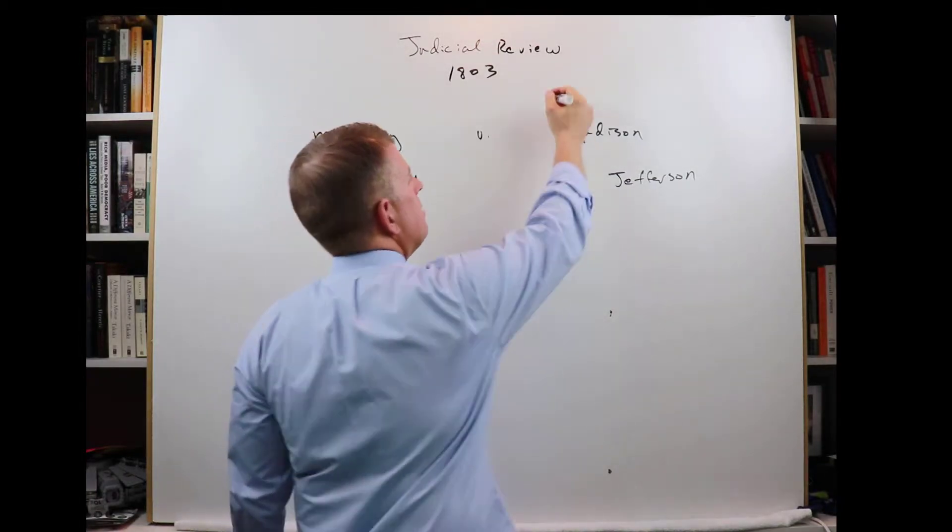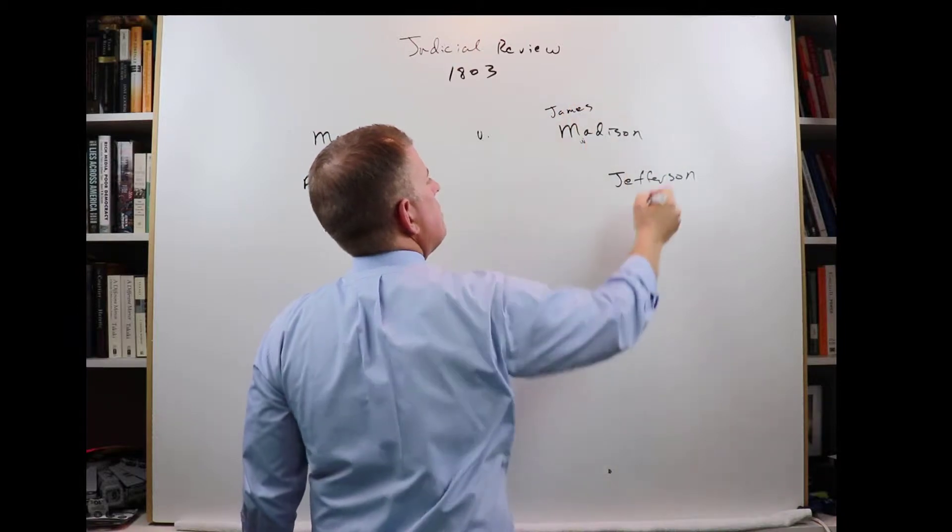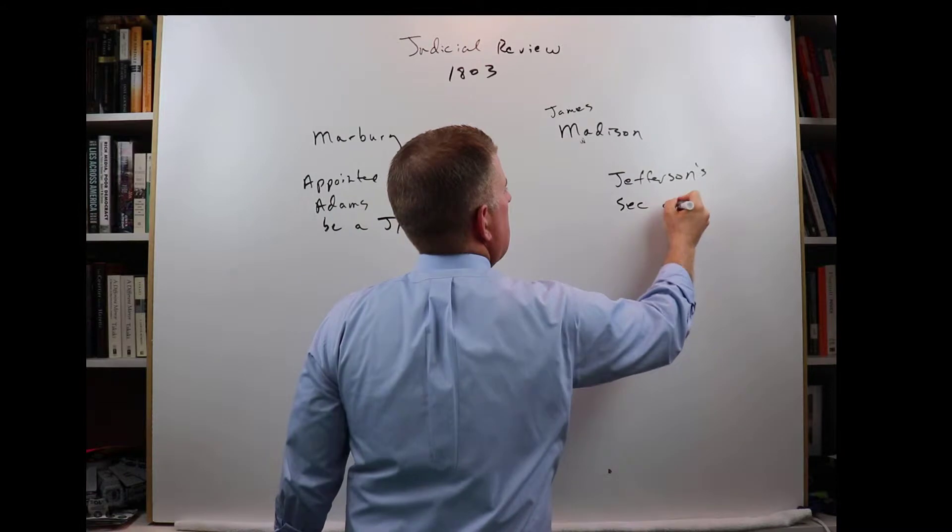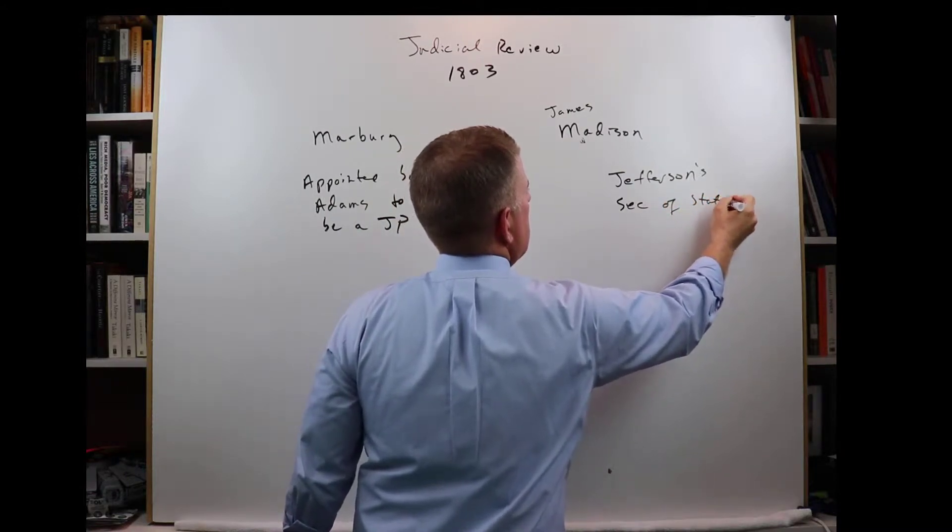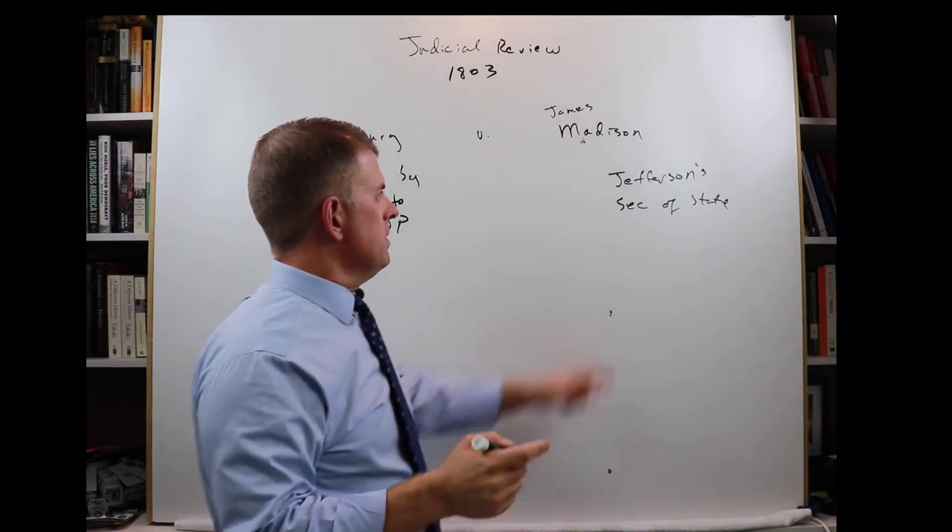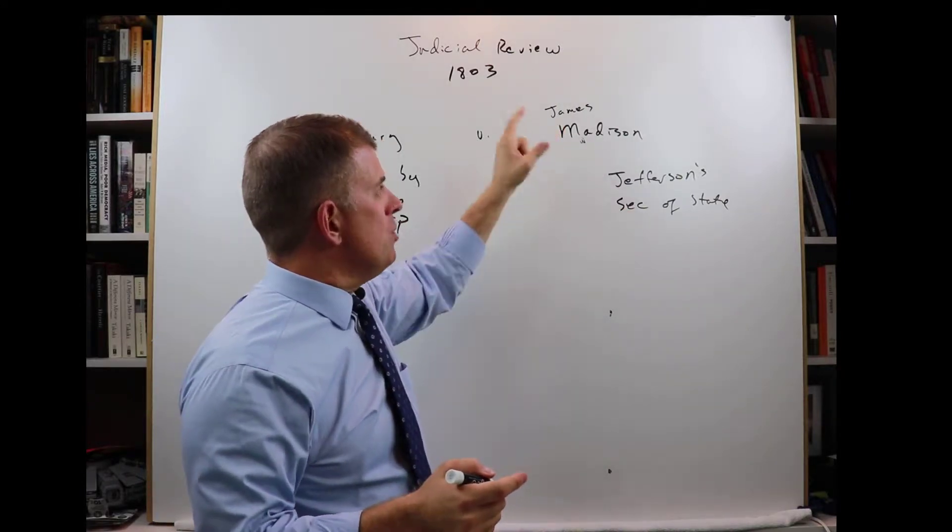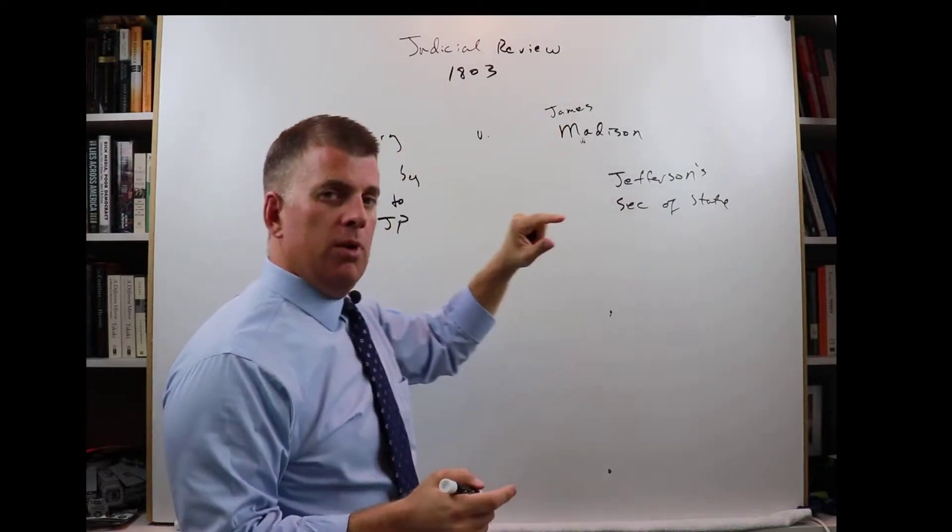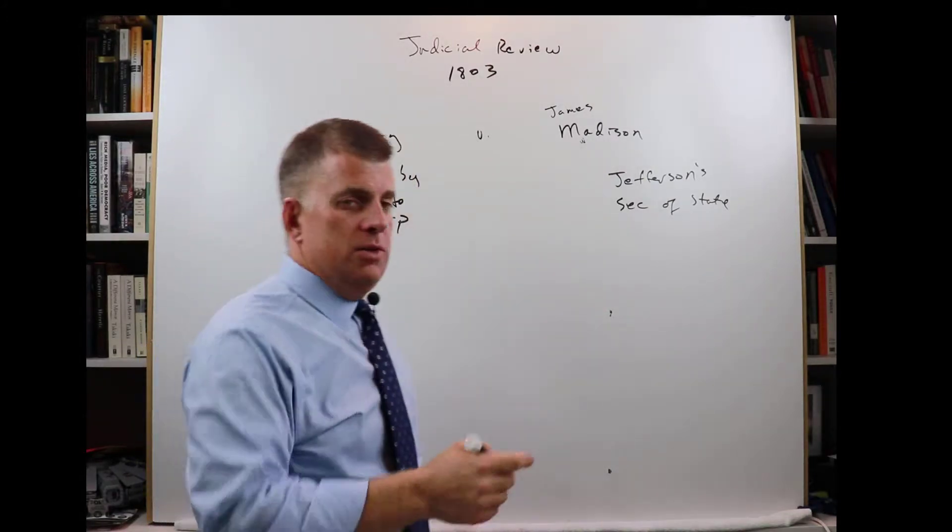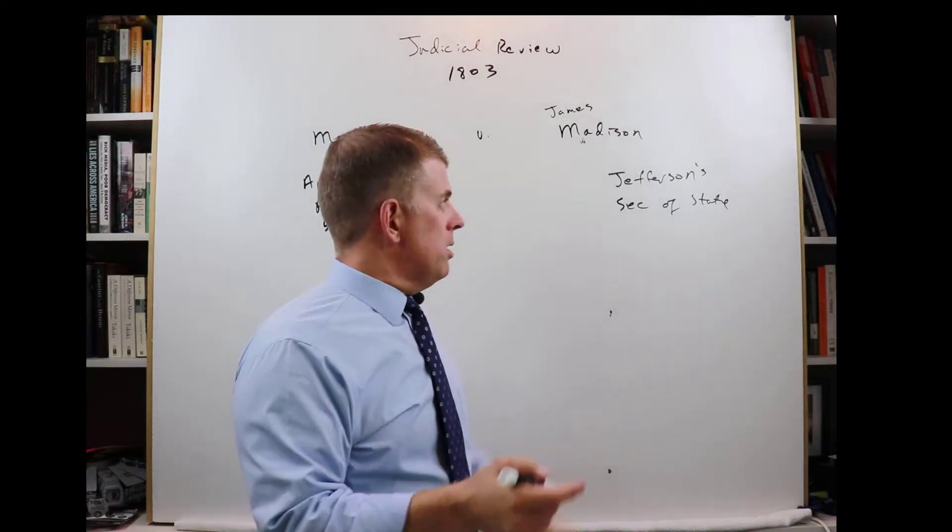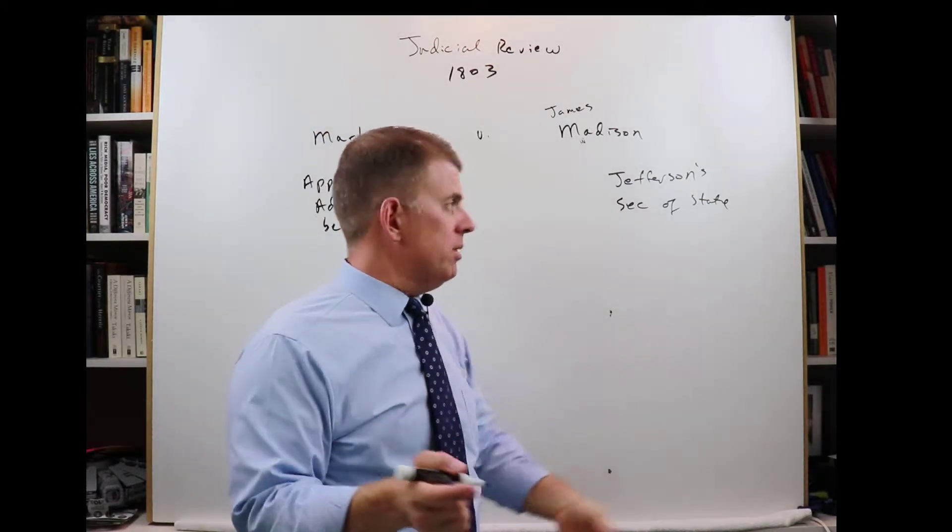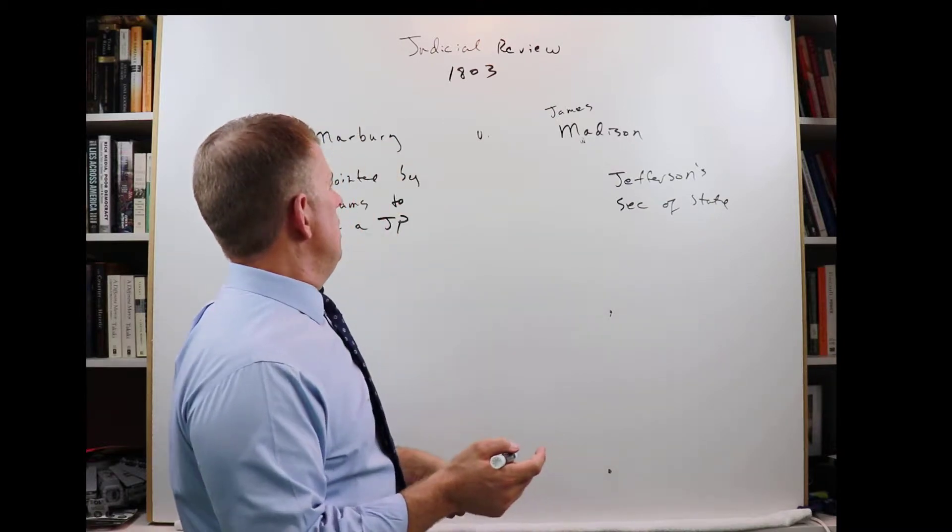James Madison was Thomas Jefferson's secretary of state. Jefferson said, Madison, do not submit the paperwork, do not file the paperwork that would give Marbury the job. Presumably, Jefferson wanted to give the job to somebody else. That's the way it works, the spoils system.